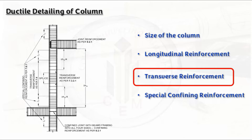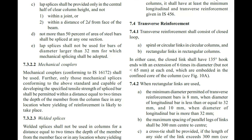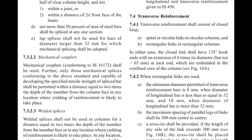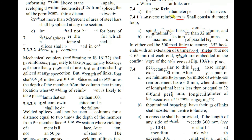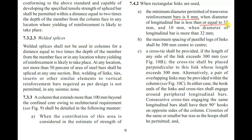For transverse reinforcement, clause 7.4 applies. We provide transverse reinforcement as spiral or circular links in circular columns, and rectangular links in rectangular columns — mainly to hold longitudinal bars in position and to resist shear. In both types, the closed link shall have a 135-degree hook with an extension of six times the bar diameter but not less than 65 mm. Use 8 mm diameter for transverse bars when longitudinal bars are ≤32 mm, and 10 mm when >32 mm. Maximum spacing of parallel legs shall be 300 mm center to center.